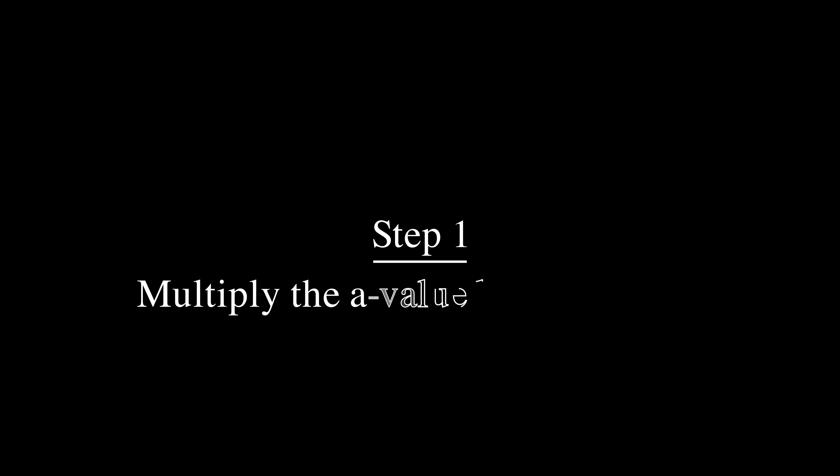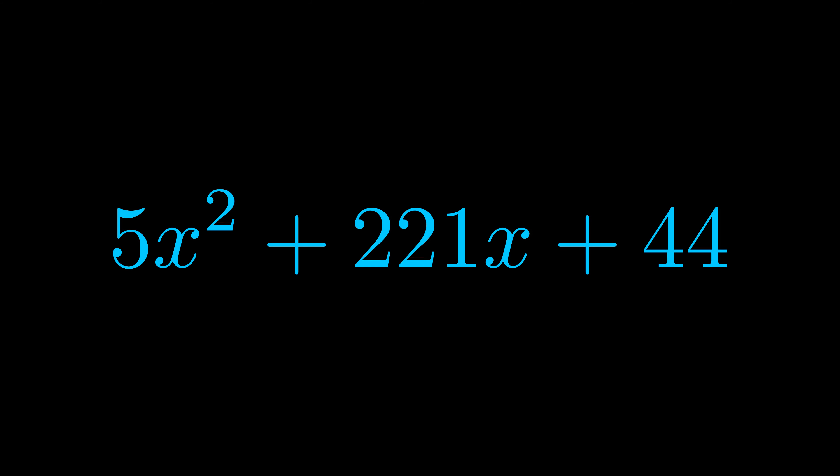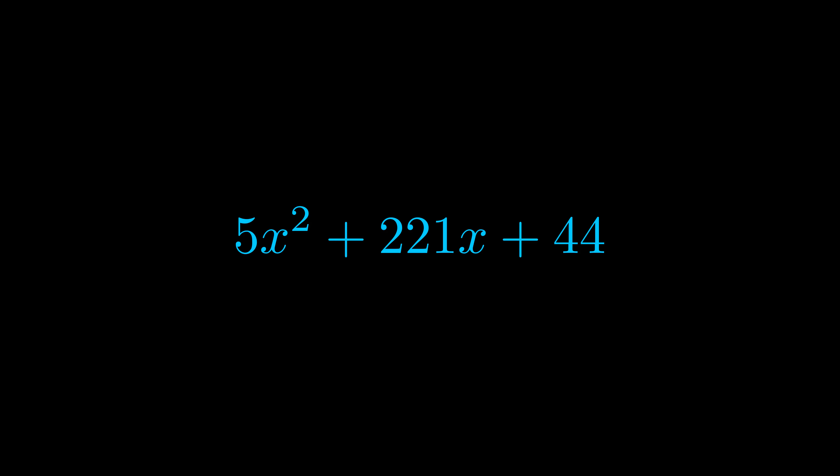Step one when factoring an equation of this form is to multiply the a value by the c value. Here we can see that our a value is the coefficient on the x squared term and our c value is the constant term.